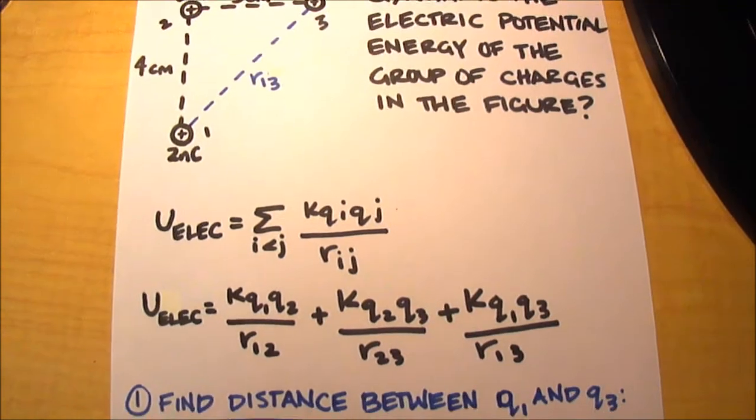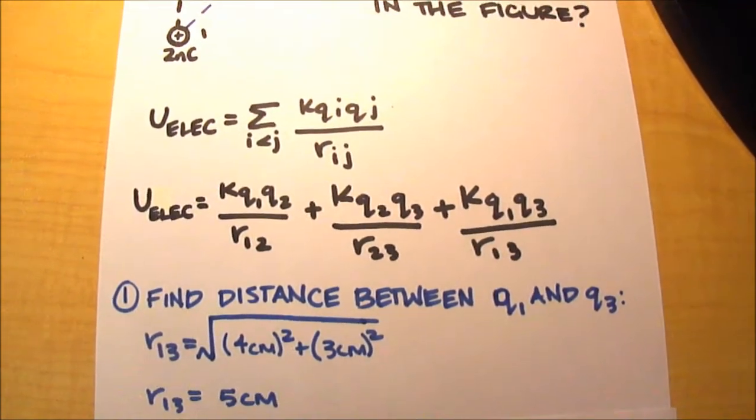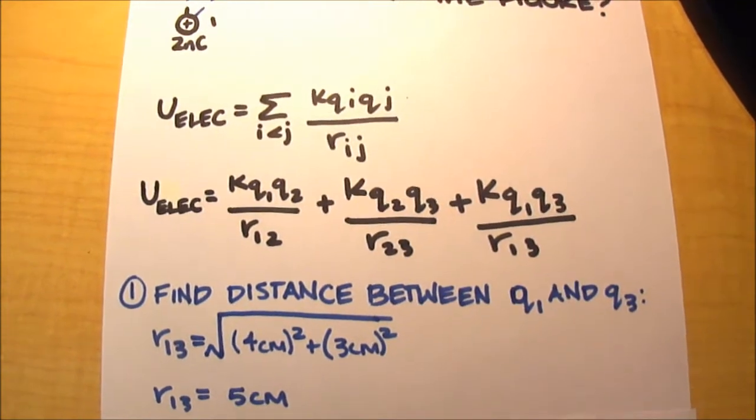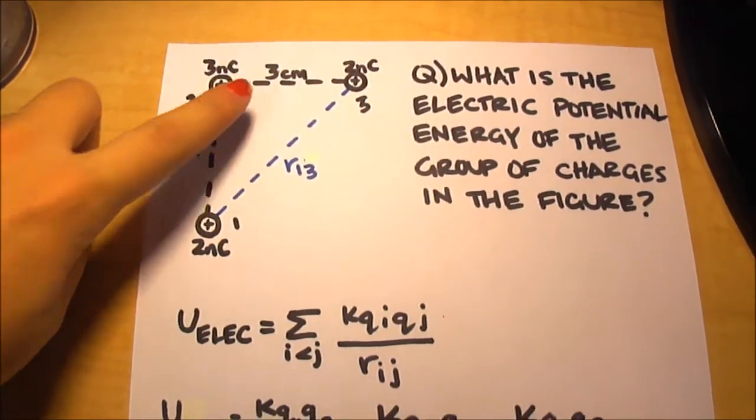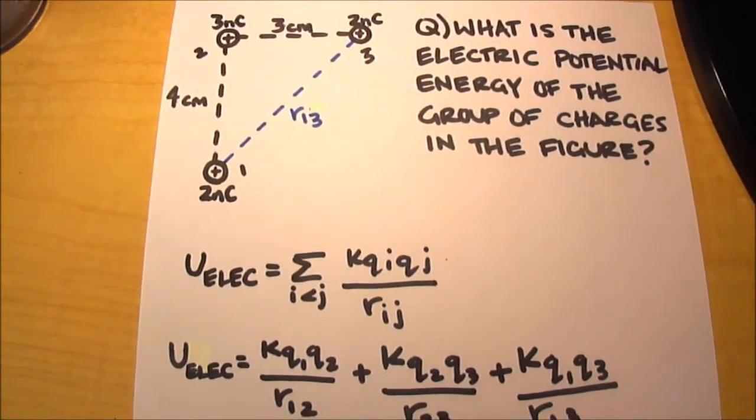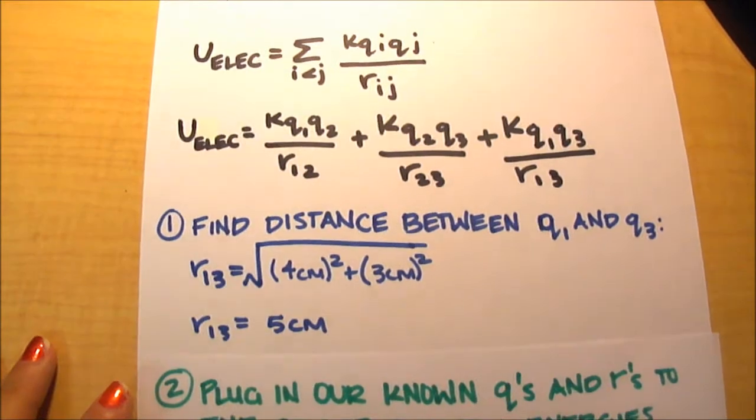Now to do this, we'll use simple Pythagorean theorem. The distance between one and three equals the square root of four squared plus three squared, which if you know your three, four, five triangle, it will give you five centimeters.